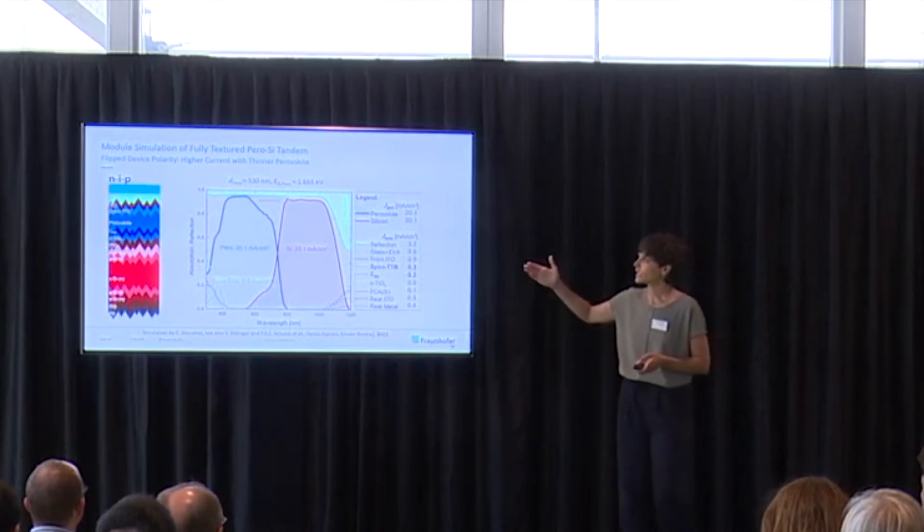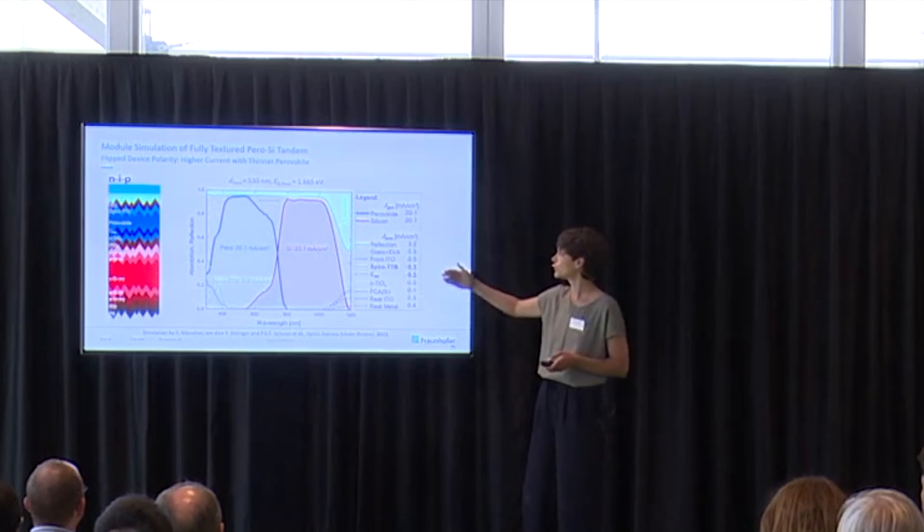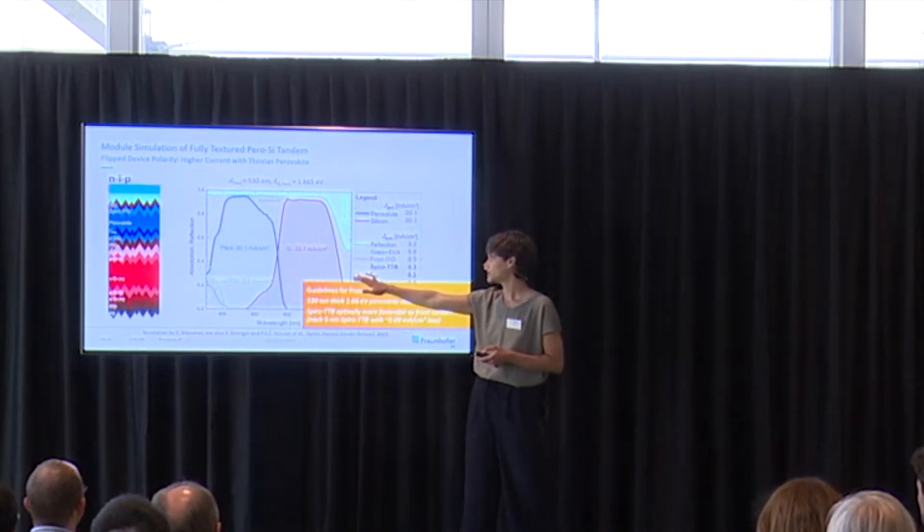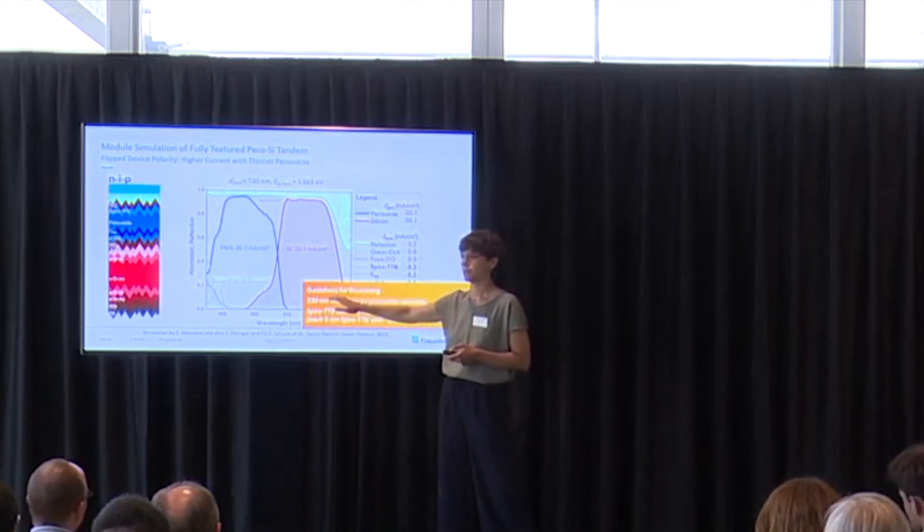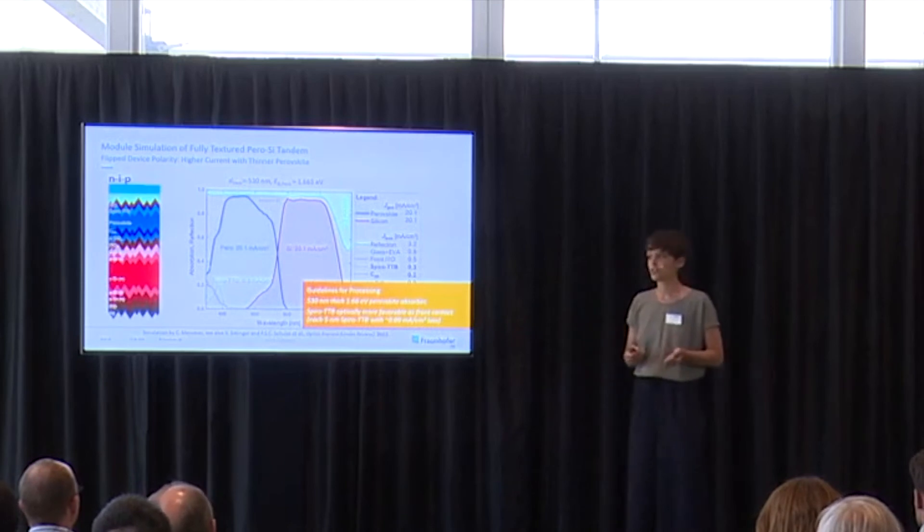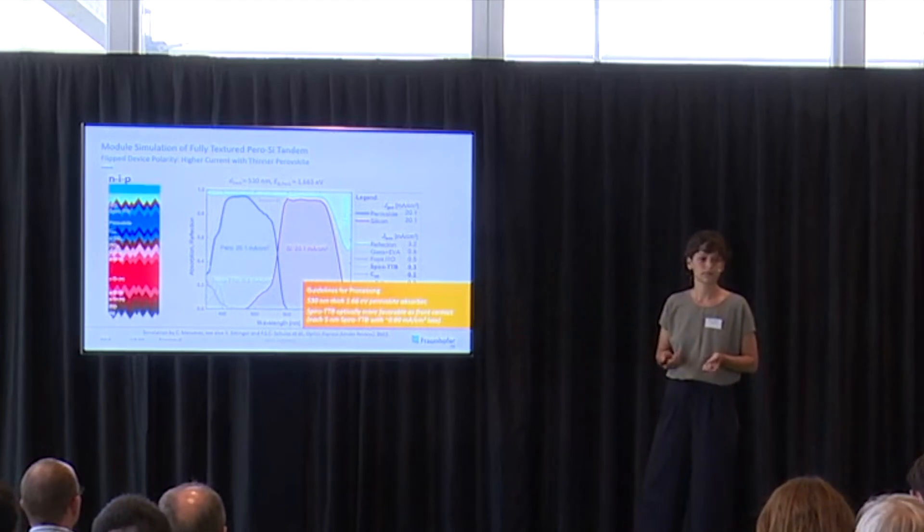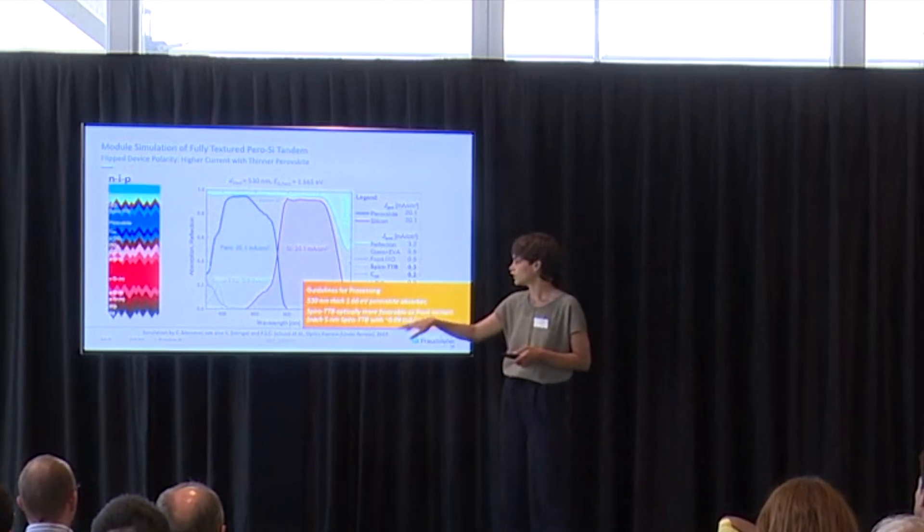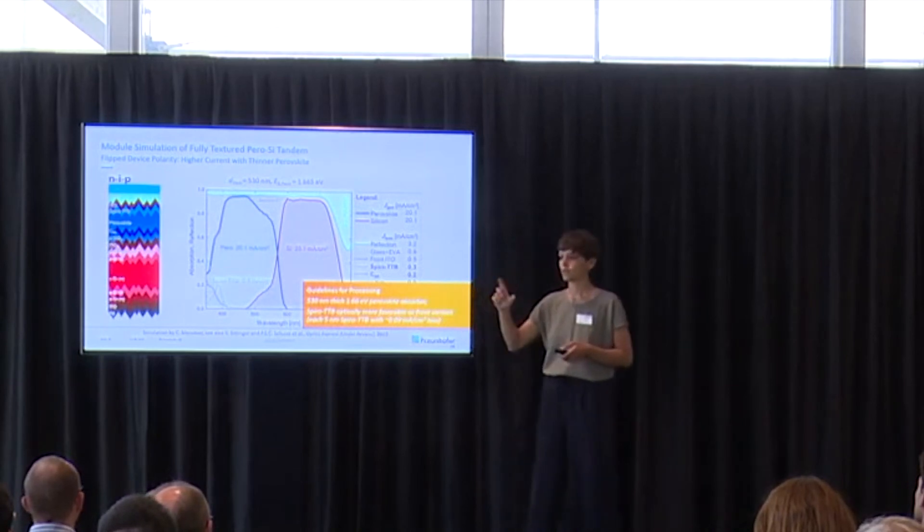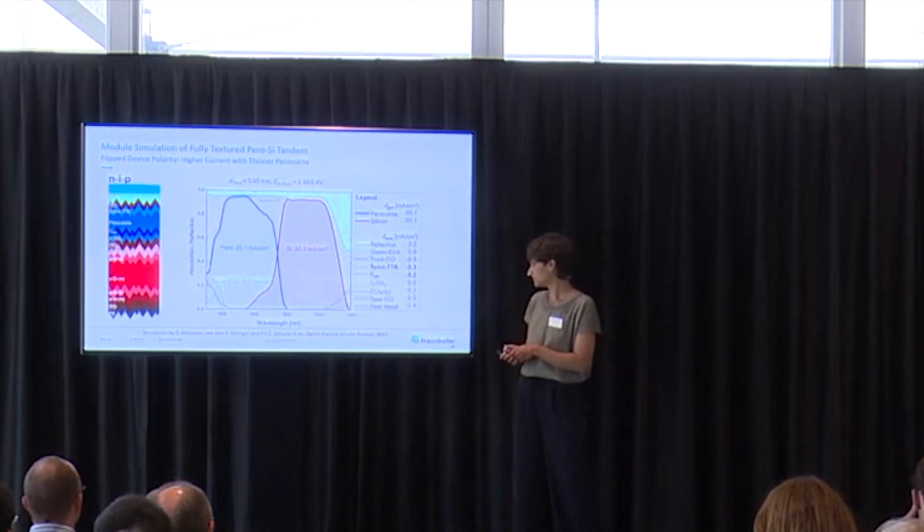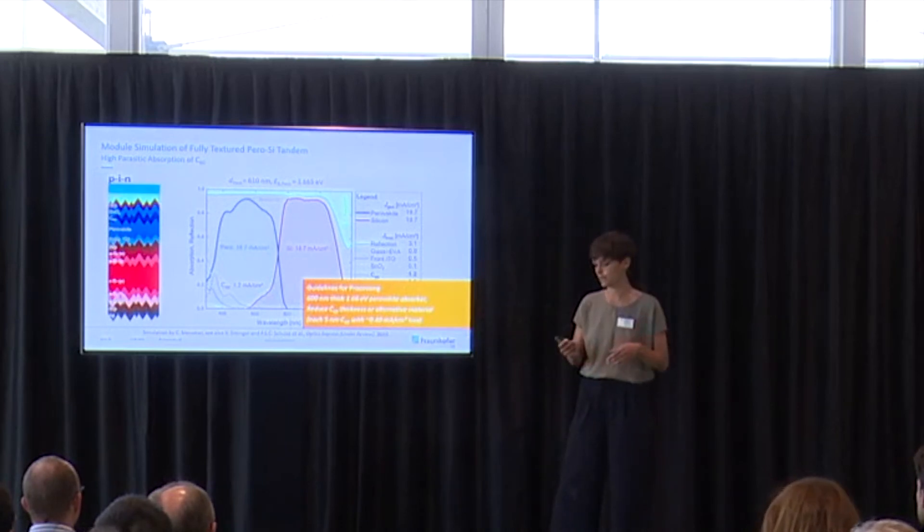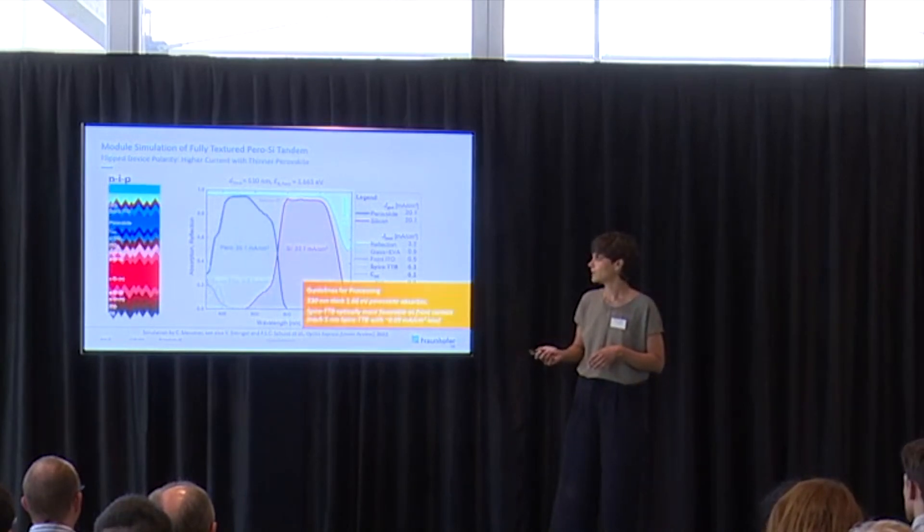Also here we can see just by putting the C60 then behind the perovskite also improves the situation. We can increase the current matching or the tandem current we expect here. We can also thin it down. We get this result even by thinning down the perovskite. So this means also all the work on charge transport material is also very important. We should not neglect that this is of course a big part also to get high efficient devices. With the Spiro-TTB, we actually are a bit more flexible because only 0.09 milliamps per square centimeter loss we have with increasing the thickness around five nanometer. Before, in the case of C60, this was more than four times higher. It's very much if you increase the thickness, you will directly see quite some impact on your tandem JSC.